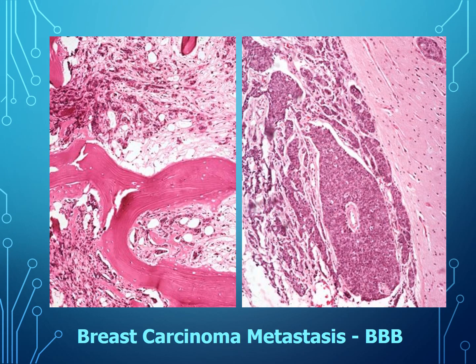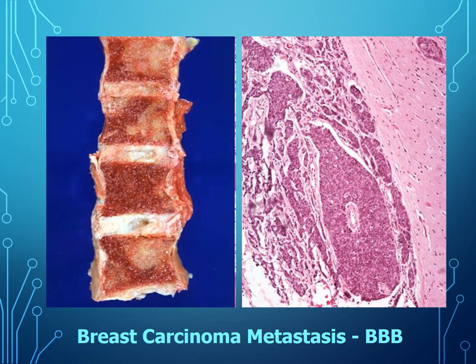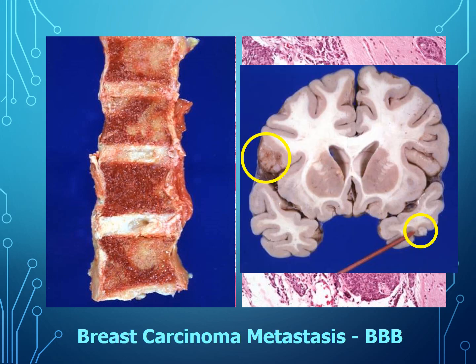Breast cancer can metastasize. Here we see metastatic breast cancer in bone — the tumor is sitting within the bone — and in the brain. Remember the three B's: breast cancer goes to bone and brain. That's an easy way to remember where it likes to metastasize.